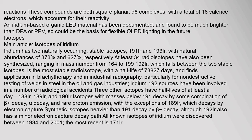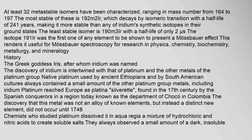These compounds are both square planar D8 complexes, with a total of 16 valence electrons, which accounts for their reactivity. An iridium-based organic LED material has been documented, and found to be much brighter than DPA or PPV, so could be the basis for flexible OLED lighting in the future. Iridium has two naturally occurring stable isotopes, 191Ir and 193Ir, with natural abundances of 37.3% and 62.7% respectively. At least 34 radioisotopes have also been synthesized, ranging in mass number from 164 to 199. 192Ir, which falls between the two stable isotopes, is the most stable radioisotope with a half-life of 73.827 days. At least 32 metastable isomers have been characterized, the most stable being 192m2Ir, which decays by isomeric transition with a half-life of 241 years.